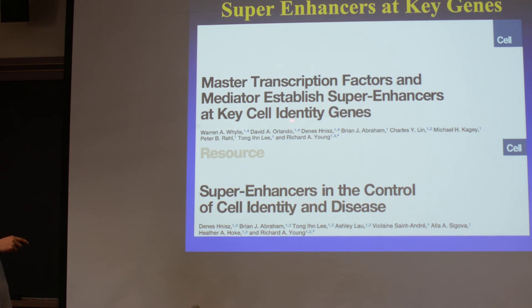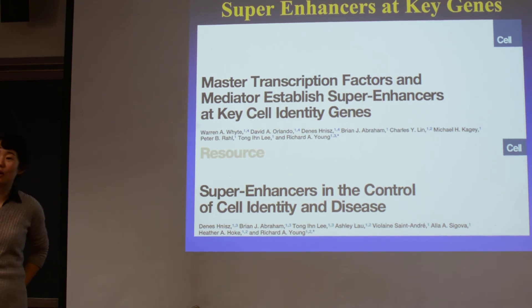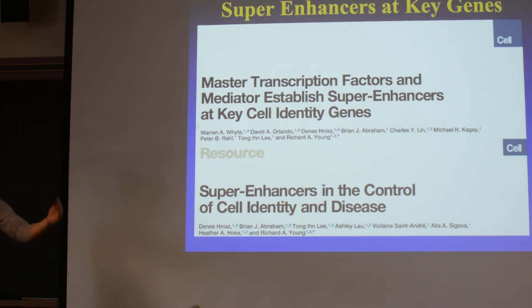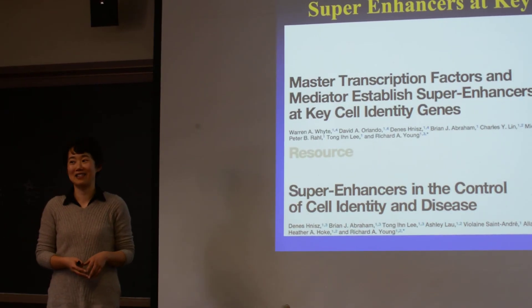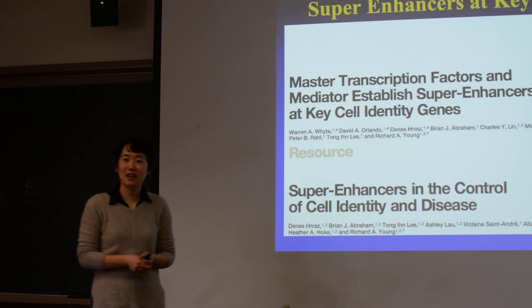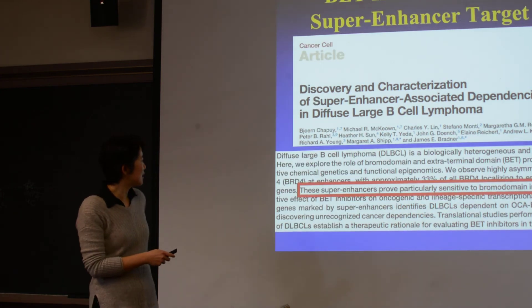Rick Young's published papers show that a lot of master transcription factors are important in establishing the super enhancer, and they are the key cell identity genes. Super enhancers control cell identity and also disease. You can see why people now want to profile H3K27 acetylation - it tells you where the enhancers are, which genes are active, and which genes are more important than others in that cell.